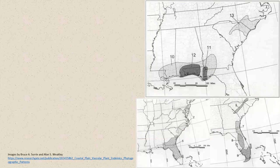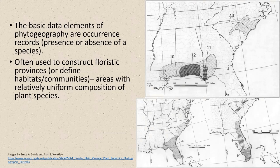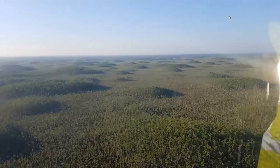For the Southeast, the basic data elements of phytogeography are pretty much occurrence records — a botanist going out into the wild, finding plants, pressing them, and recording where they were found, the date, and notes. Those records are used to construct floristic provinces or defined habitats and communities. This photograph I took while doing contract work in Big Cypress illustrates one aspect of phytogeography: plant communities.